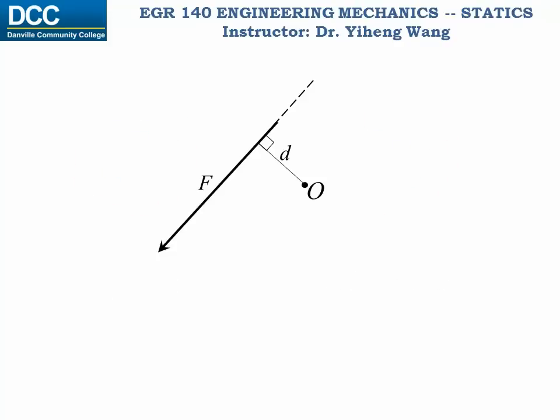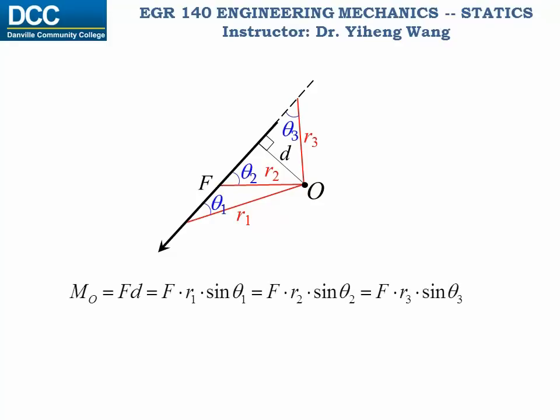Alternatively, we can draw a line from point O to anywhere on the line of action of force F — R1, R2, or R3 — and determine the angle between each of these three lines and the force: theta 1, theta 2, and theta 3 respectively. The moment can then be determined as F times R1 sine theta 1, or F times R2 sine theta 2, or F times R3 sine theta 3. According to trigonometry, R1 sine theta 1 equals D, as do R2 sine theta 2 and R3 sine theta 3.